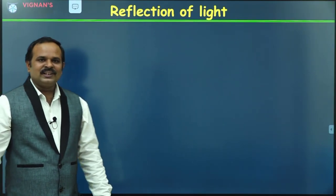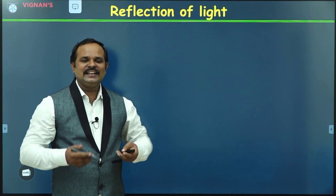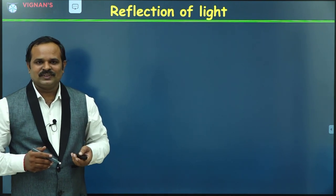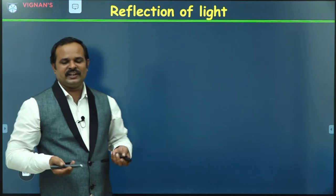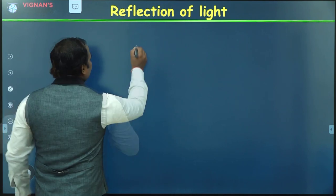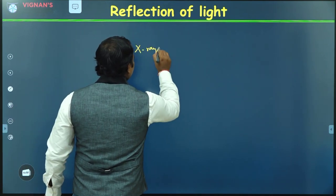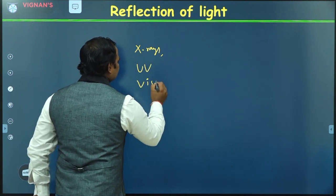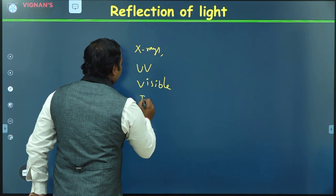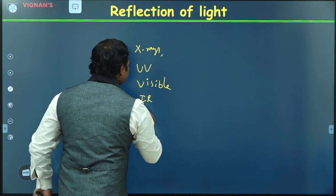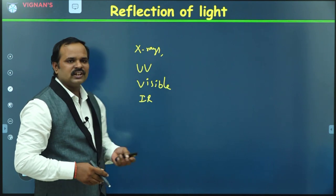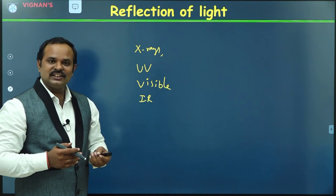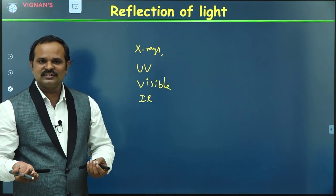The question here is: does light have a wave nature or a particle nature? Light means electromagnetic waves, starting from X-rays, ultraviolet radiation, visible radiation, infrared radiation, microwave radiation, radio waves, and so on. All these are electromagnetic waves. The question is: does radiation behave like a particle or like waves?